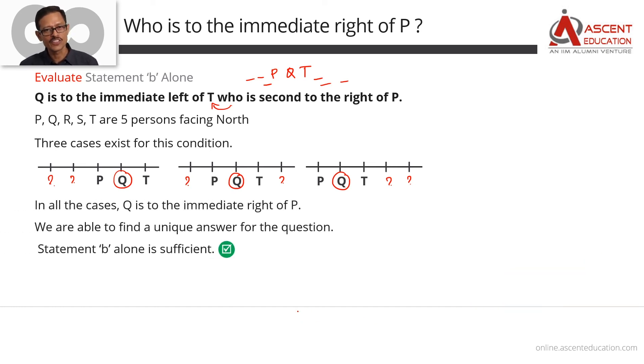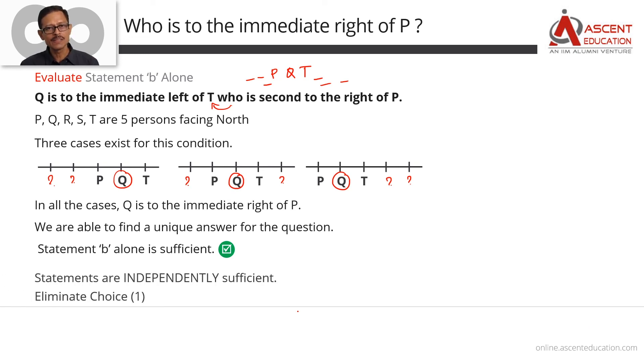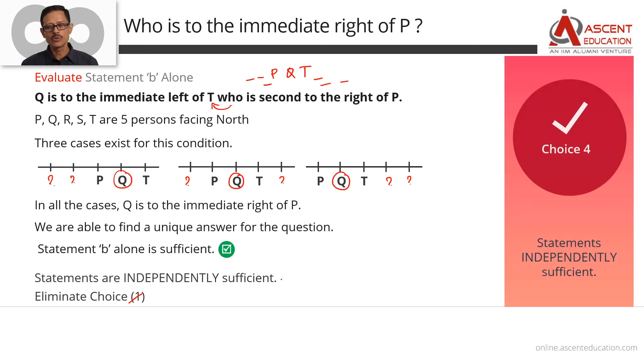Statement A was sufficient and Statement B is also sufficient. Each statement is independently sufficient to answer the question. Therefore, eliminate answer option 1 — answer option 4 is the correct answer to this question.